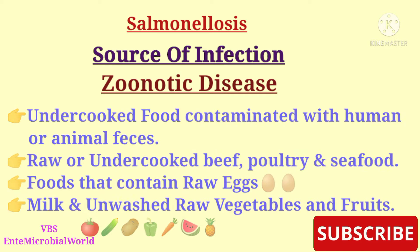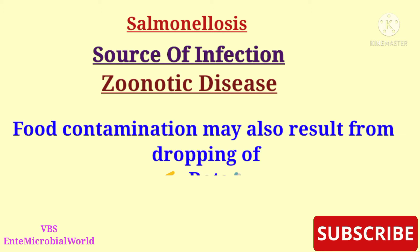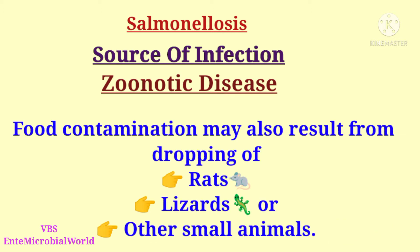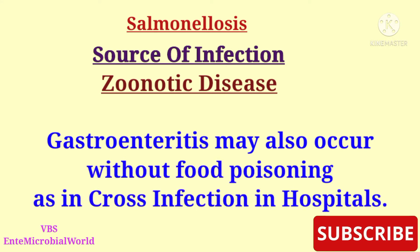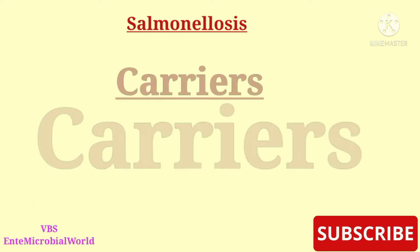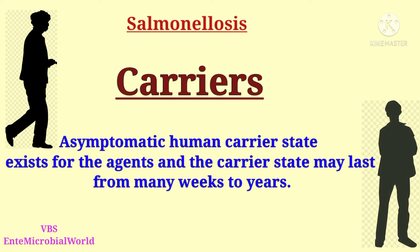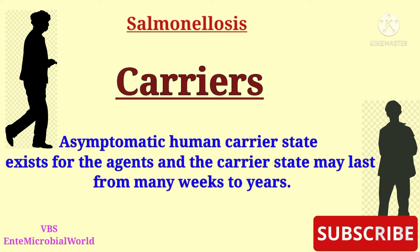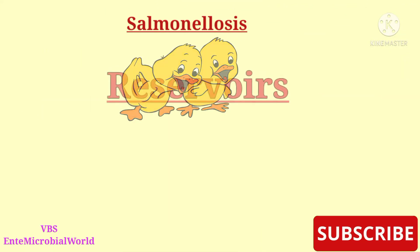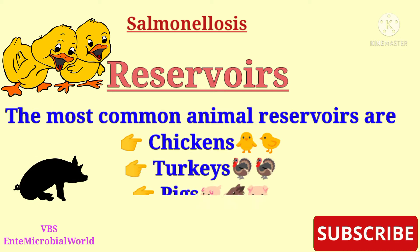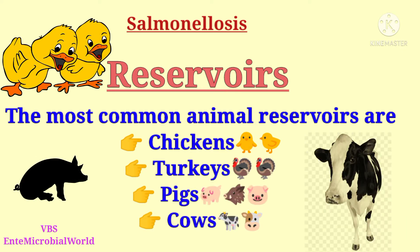Sources include undercooked food contaminated with human or animal feces, raw or undercooked beef, poultry, seafood, foods that contain raw eggs, milk, and unwashed raw vegetables and fruits. Food contamination may also result from droppings of rats, lizards, or other small animals. Asymptomatic human carrier state exists, and the carrier state may last from many weeks to years. The most common animal reservoirs are chickens, turkeys, pigs, and cows.